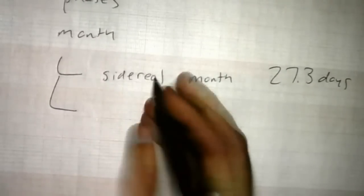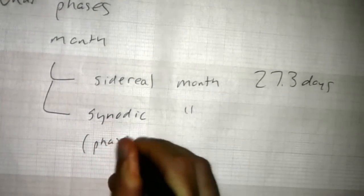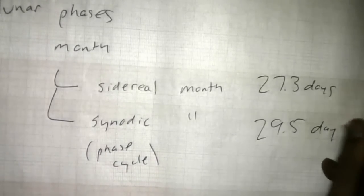This phase cycle month, we call this synodic. Synodic month, where synodic is referring to the phase cycle. And this one, you're probably familiar with this, is 29 and a half days.